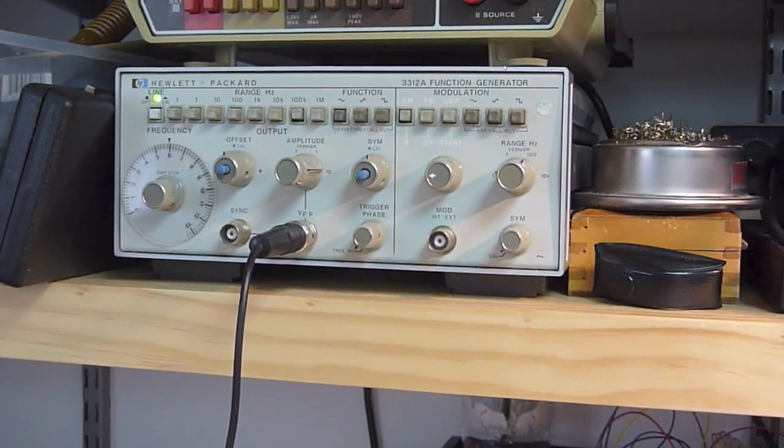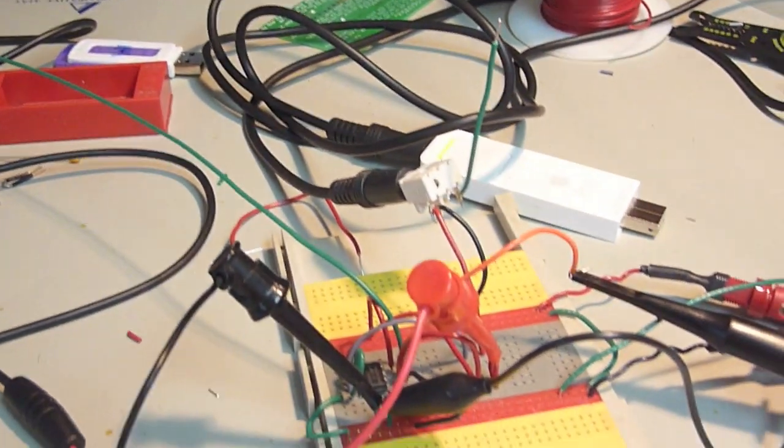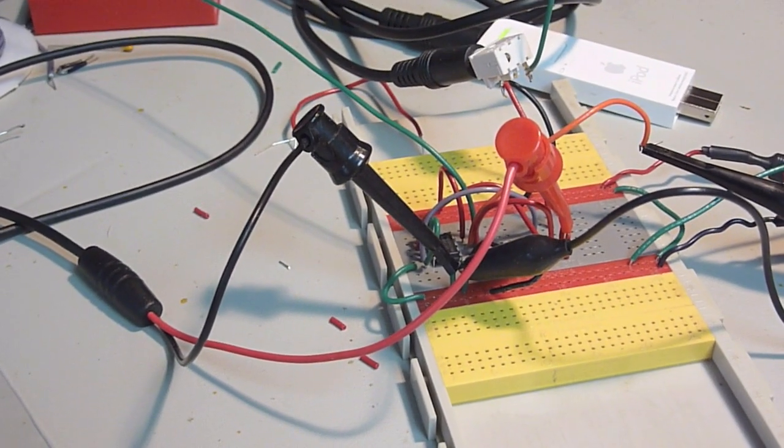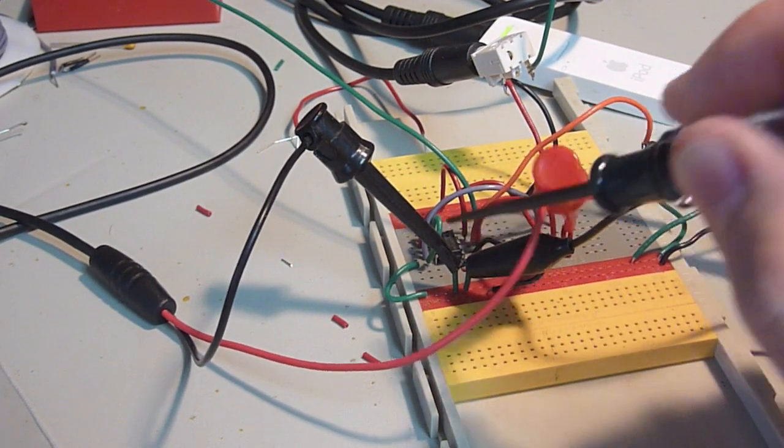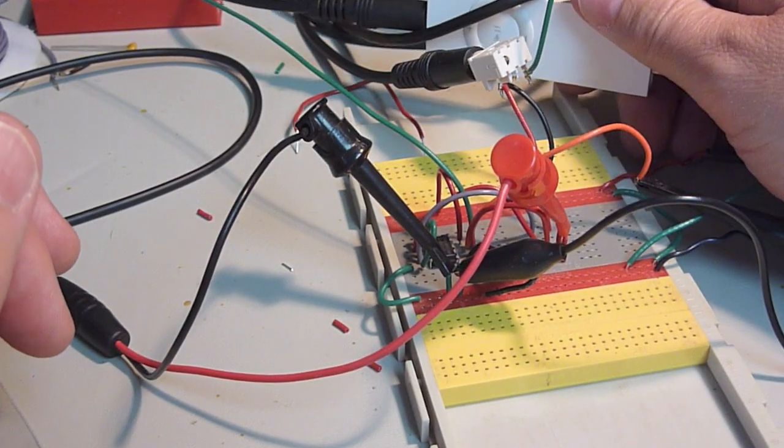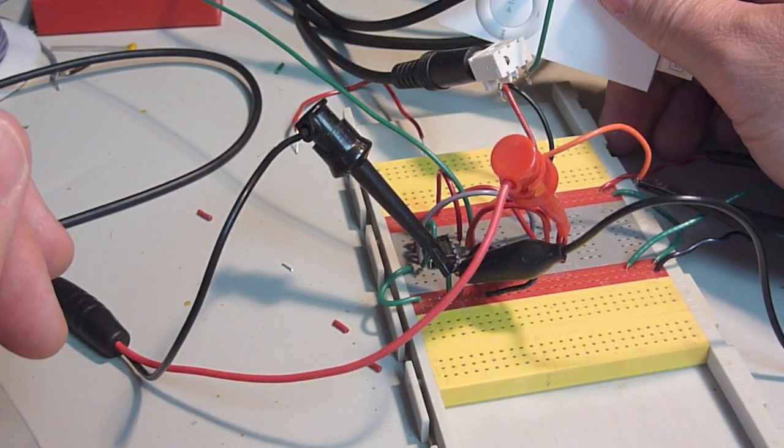I'm generating the carrier with my old HP function generator. This is the circuit. It's hard to see here on the breadboard, but basically it's just the AD633 chip and I'm feeding in the carrier and then the music is coming in directly off the headphone jack from an old iPod.